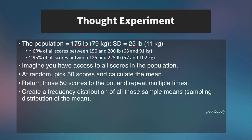Imagine you have access to all 1,500 scores in a spreadsheet and you randomly grab 50 scores and calculate the mean, then return those 50, grab another 50, calculate that mean, and keep doing this. This would create a frequency distribution of all of those sample means.